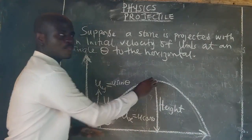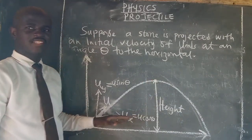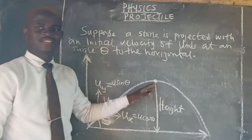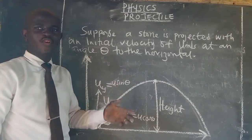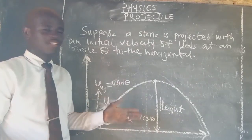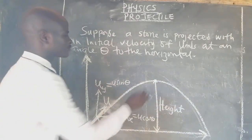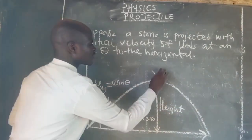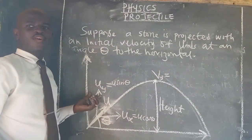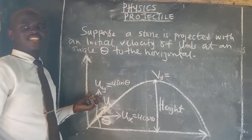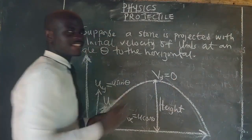The vertical component of the initial velocity is Uy, which equals U sin θ. This is the component keeping the object moving upward. The horizontal component is Ux, which equals U cos θ, keeping the object moving horizontally. At the peak point — the maximum height — the projectile momentarily comes to rest before coming back down. Therefore, the vertical velocity component Vy becomes zero at that point.